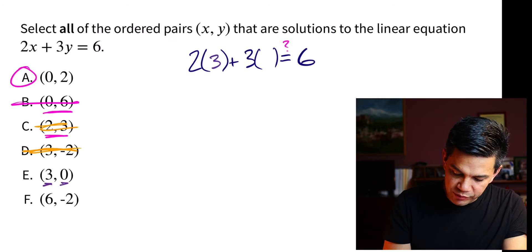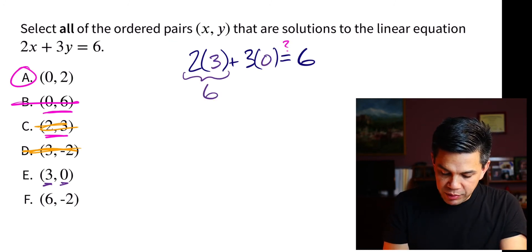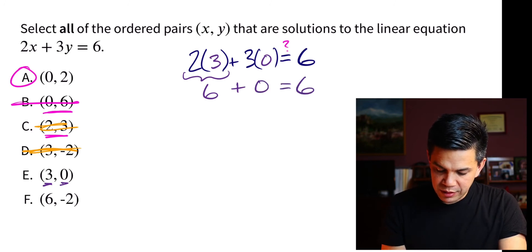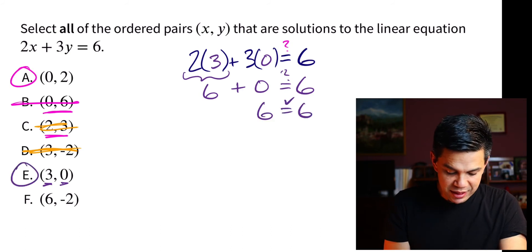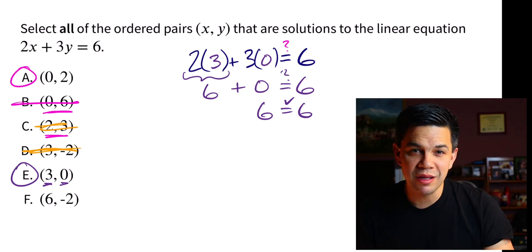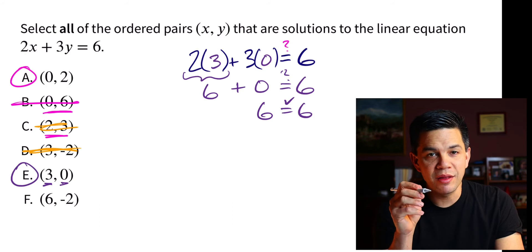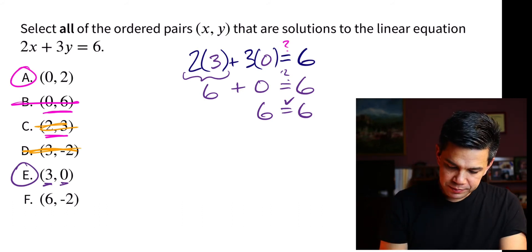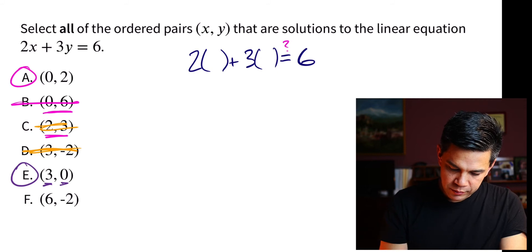3 and 0. 3, of course, is the x value. 0 is the y value. Multiply these out to get 6 plus 0, 0 plus 6. Does that equal 6? Well, it does equal 6. All right, so we have two values here that are solutions to this linear equation. These are points that will appear on the line if you graph this out.